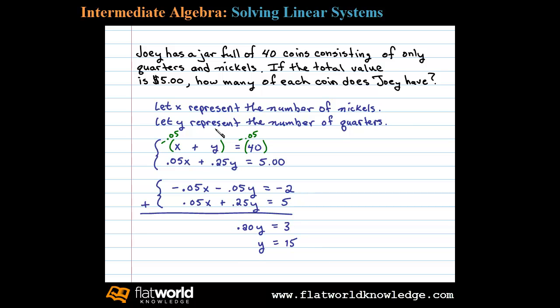Now all that's left to do is back substitute to determine the number of nickels. Using X plus Y equals 40 coins, we can say X plus 15 quarters equals 40, or X equals 25. That is, 25 nickels.